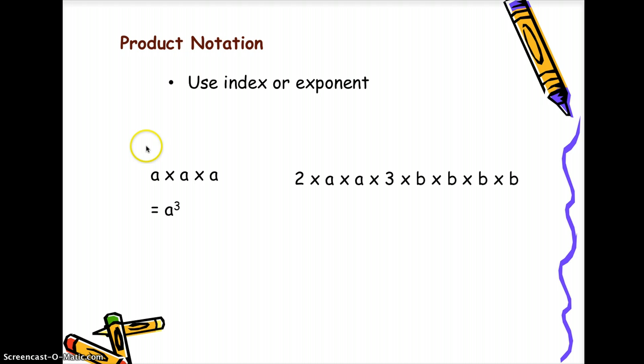Another example, we have this very long expression. So let's look at the constants 2 and 3. Let's multiply them. So 2 times 3 is 6. And then let's count the number of a. We are removing all the multiplication symbols x. So we have 1, 2. So it's a squared. And then the number of b's are 1, 2, 3, 4. So it's b raised to the fourth power.